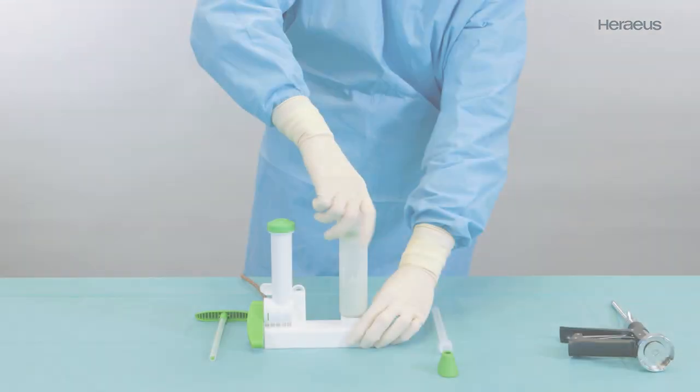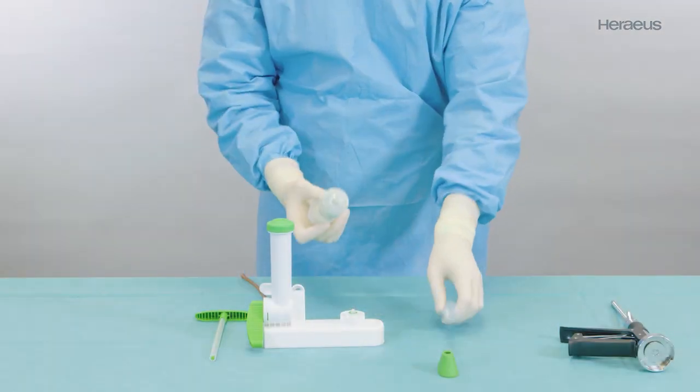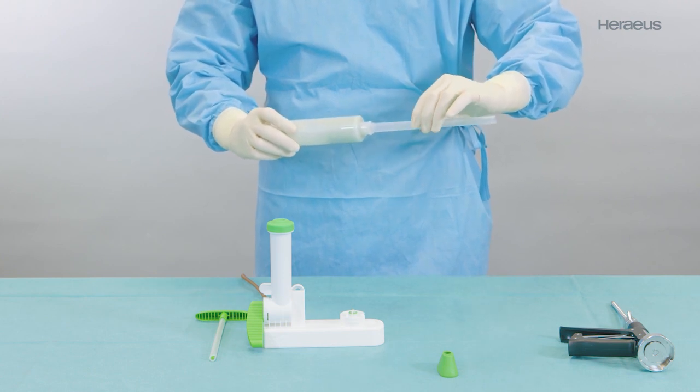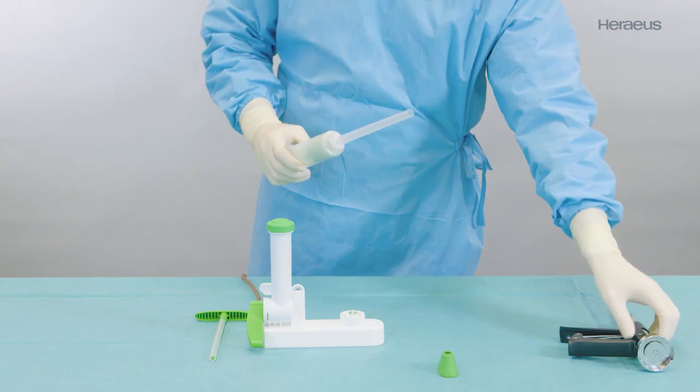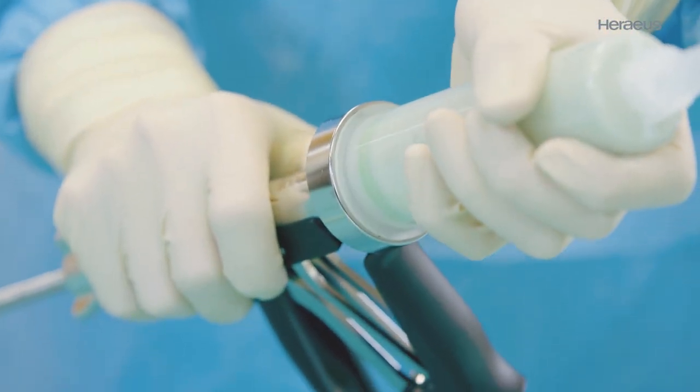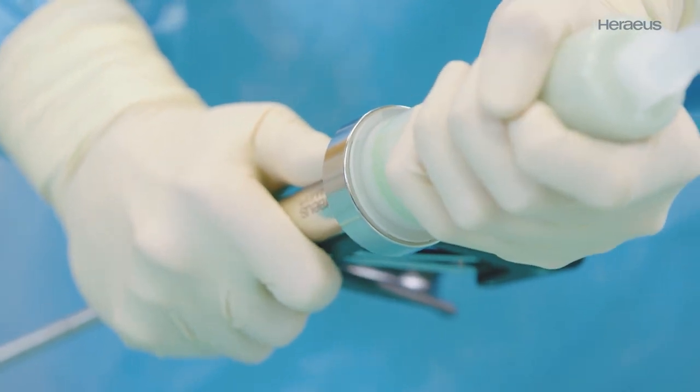To apply the ready mixed bone cement, screw the application nozzle onto the cartridge. Then screw the cartridge onto the cement gun with a short rotary motion. An audible click will ensure it is fully attached.